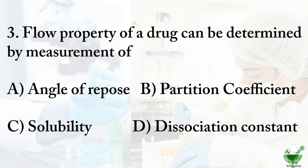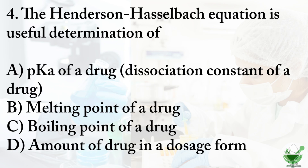Question number three: flow property of a drug can be determined by measurement of — option A: angle of repose, option B: partition coefficient, option C: its solubility, option D: dissociation constant. The correct option is A, angle of repose. Density indices such as Carr index, Hausner ratio, angle of repose, powder rheometry, and shear cell testing are used for flow property determination.